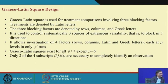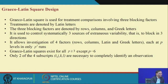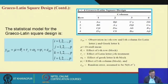Graeco-Latin Square exists for all P greater than 3 levels, except P equals 6. Only two of the four subscripts in Y_ijkl are necessary to completely identify an observation.